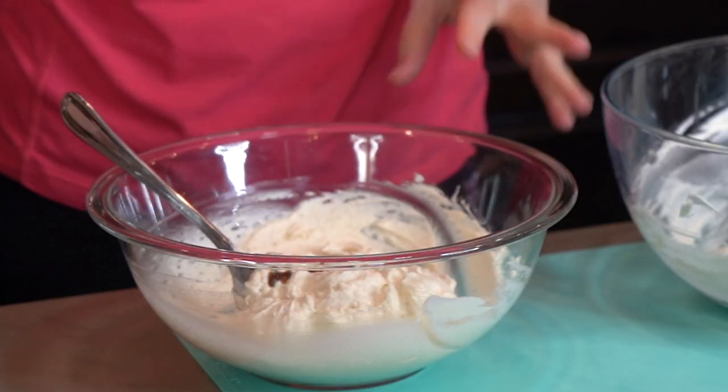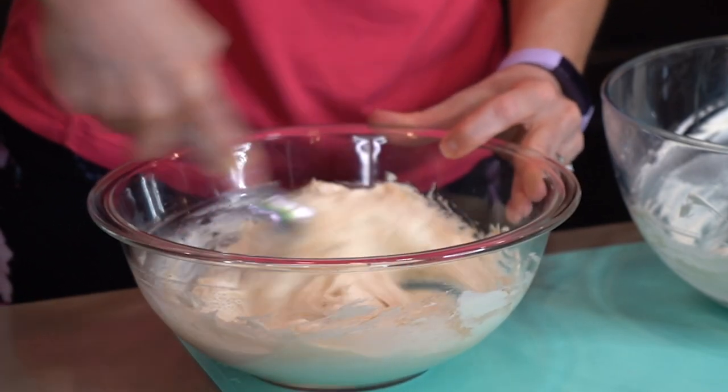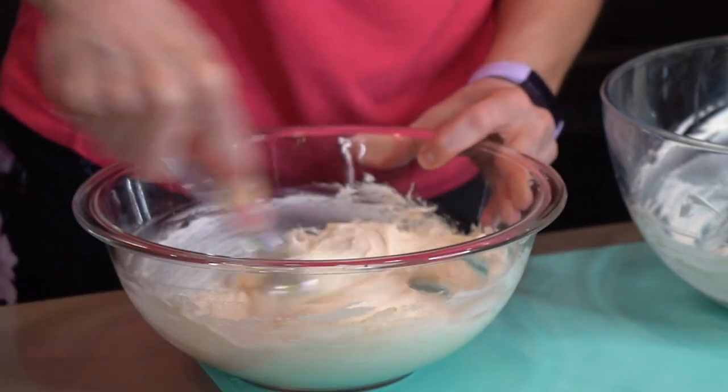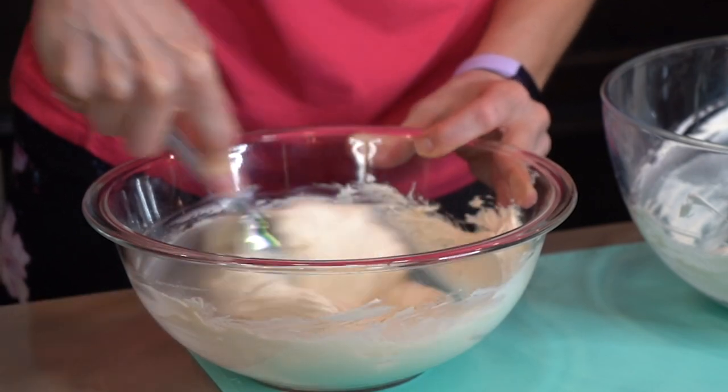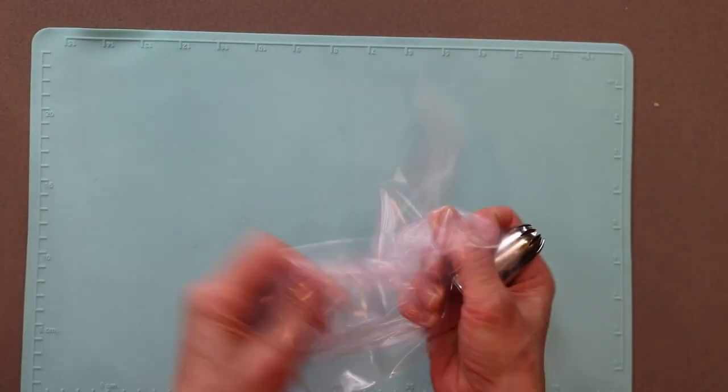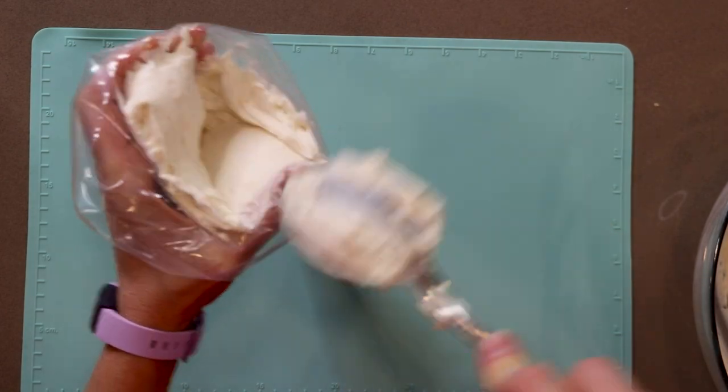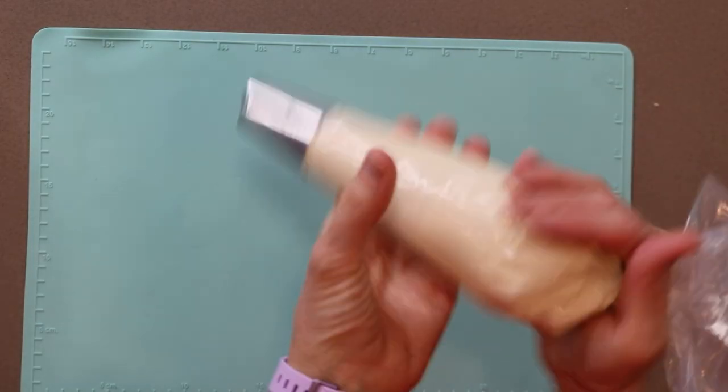And the other half of the buttercream is getting flavored with my espresso mixture. I just poured in a little of the espresso because I didn't want the buttercream to be too thin. Both of the buttercream frostings are going into piping bags. The white icing for the top needs a star tip. And you can use any tip for the coffee buttercream. I just used a round icing tip.